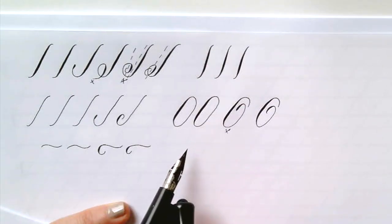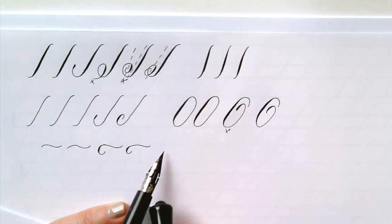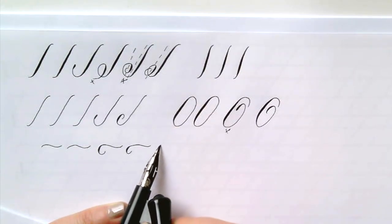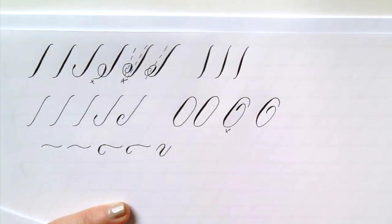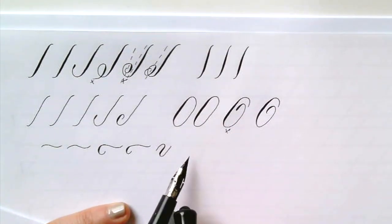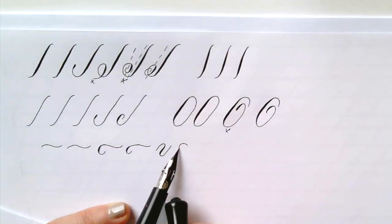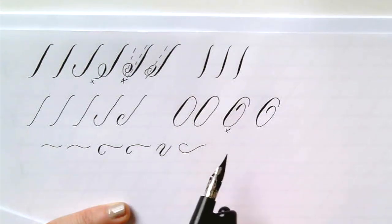These sit on the ascender line, and again with the uppercase letters we have a little bit more flexibility. So I like to make the uppercase letters a little more dramatic, so I like to go above the ascender line as well.